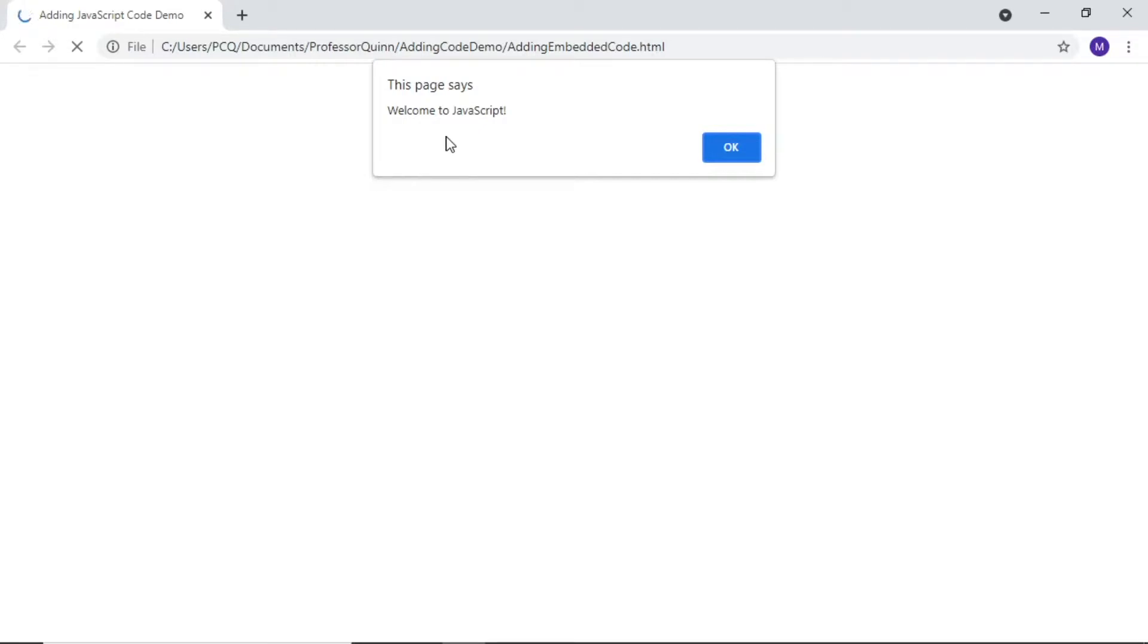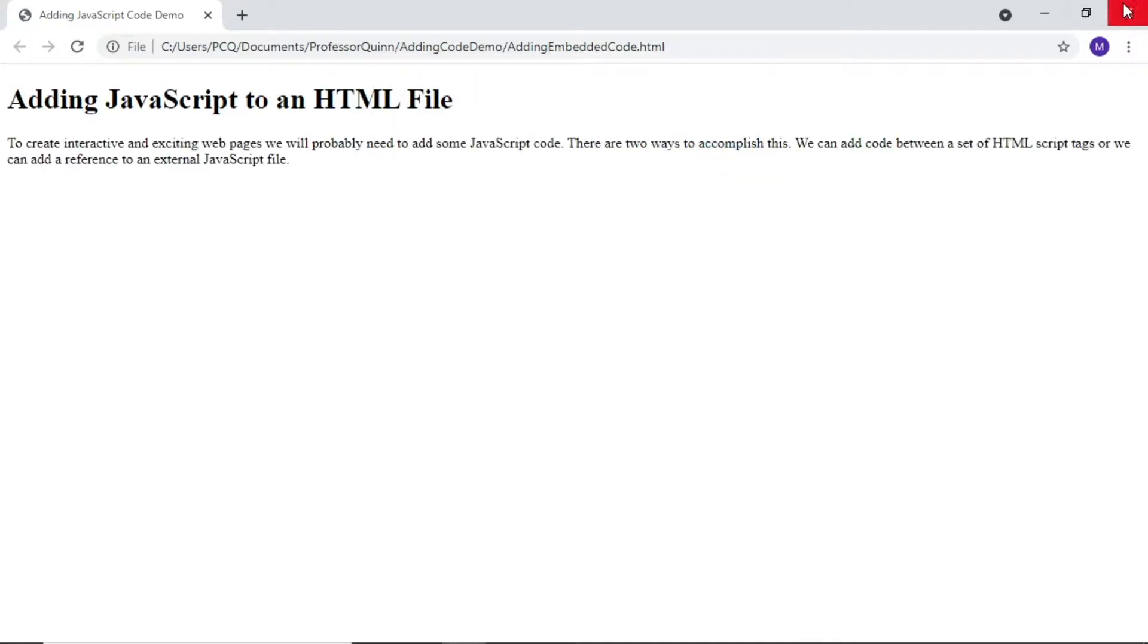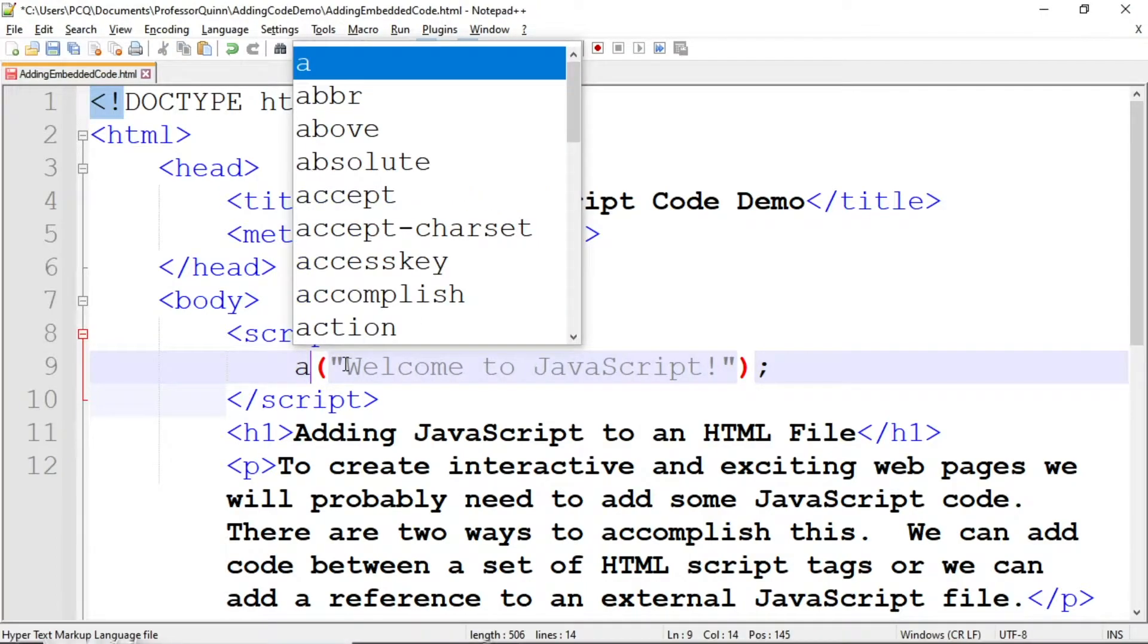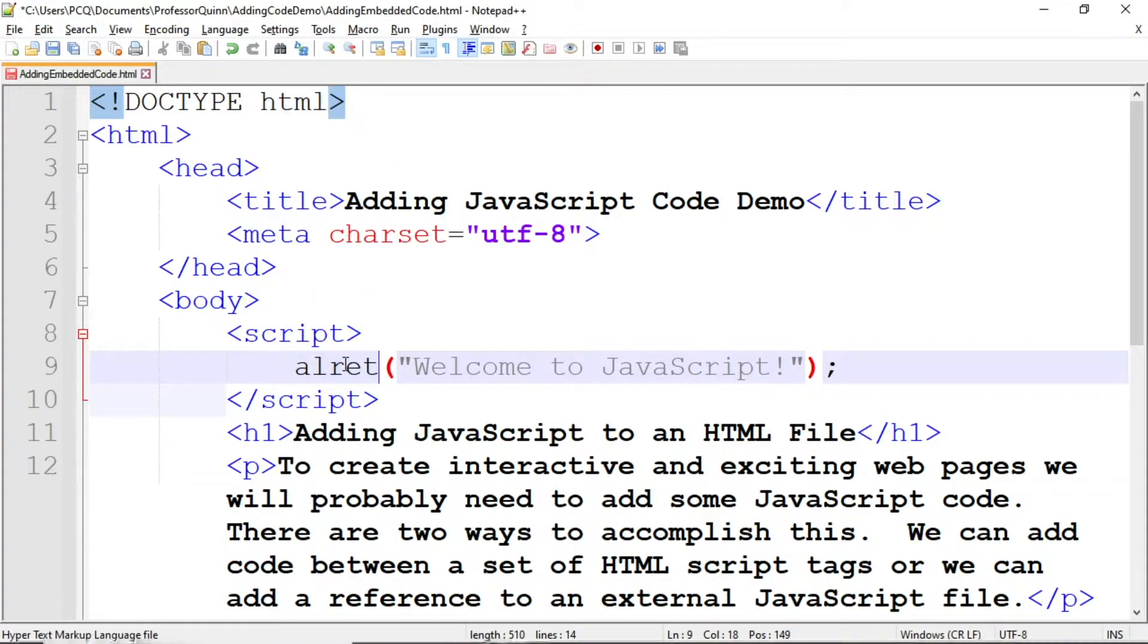Now let's return to the HTML document and throw in a monkey wrench or two. We will start by typing our function name incorrectly. On line nine, I'll type A-L-R-E-T to misspell the function name. Save, and run the code.